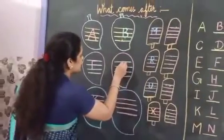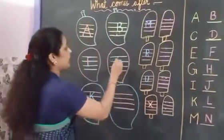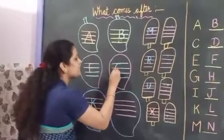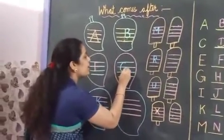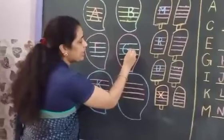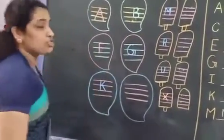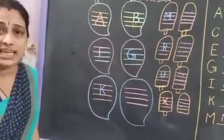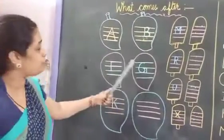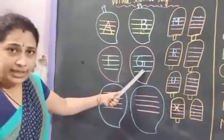After G for grapes. What will we write? G. Make a curve and a slanting line, and a small standing line. It's made G. G for grapes. F for fish, G for grapes.